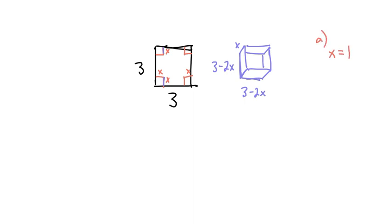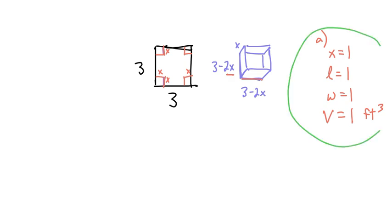This could be an answer to part A. Well, 3 minus 2, because you cut 1 on each side, has a length of 1. And same thing with over here, has a width of 1. And if you multiply those three together, then the volume would be 1 cubic foot. So that could be enough for one answer.